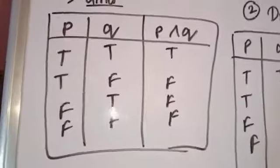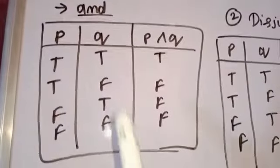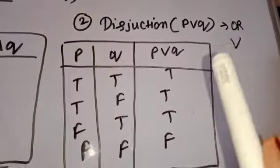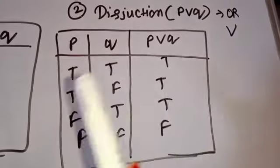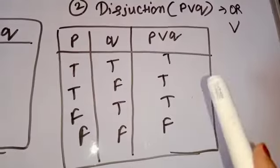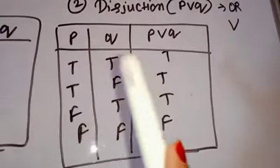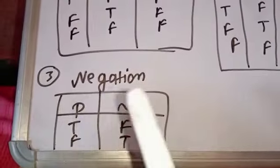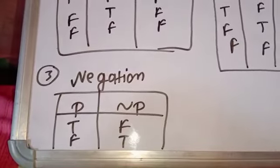So you can see, what we have made is called a truth table. In the case of the AND operator, if both are true then the result is true; if both are not true then it is false. In the case of the OR operator, if even one is true then the result is true. Whereas in the case of the negation operator, one is always the opposite of the other.